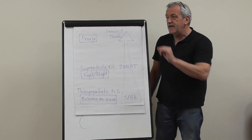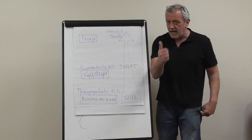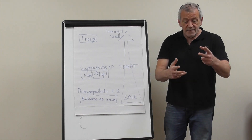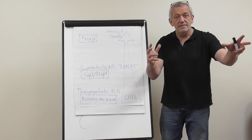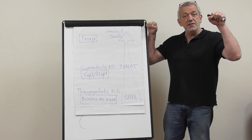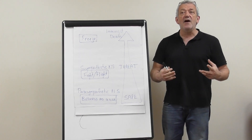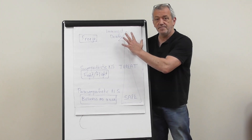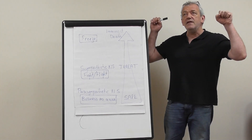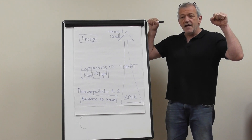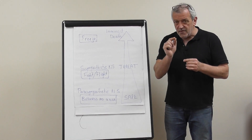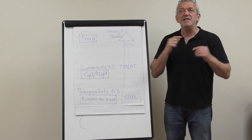If the threat becomes so insurmountable that you can't flee and there's nothing you can do to alleviate it — like a lion too injured to run and too outmatched to fight — they will lie down on their backs in a prone position. This is the freeze response, where the autonomic nervous system shuts down. It's a state of complete submission: 'I can't hurt you from here, I'm ready to die.'